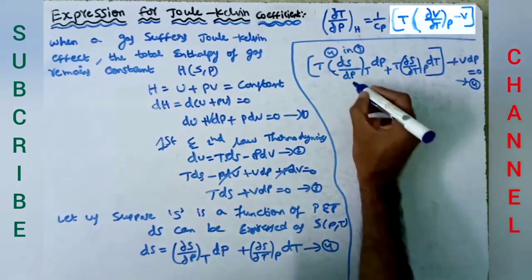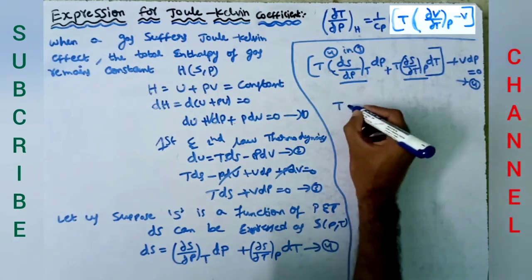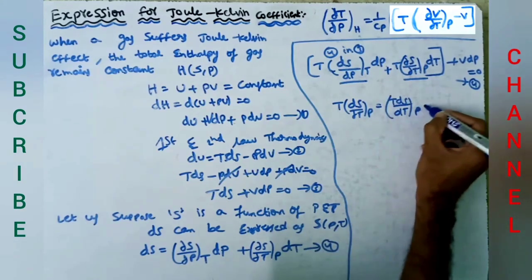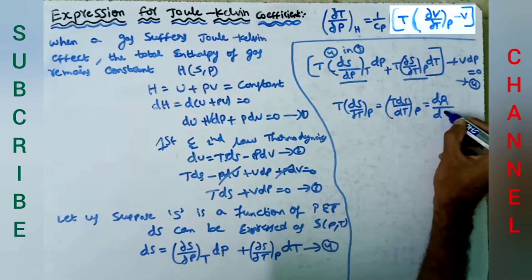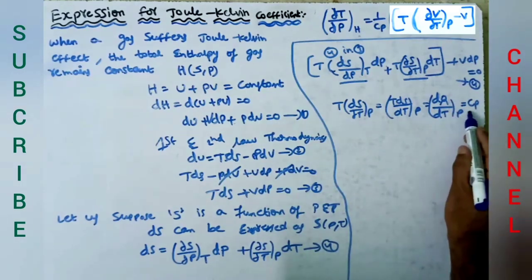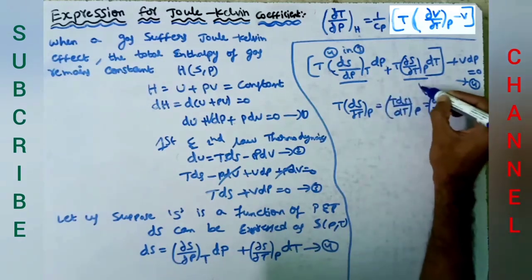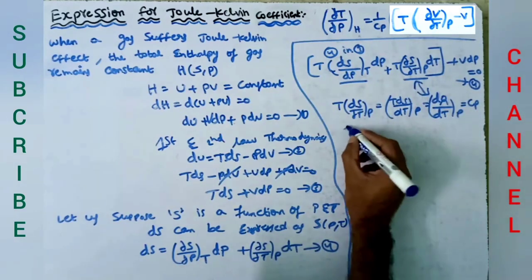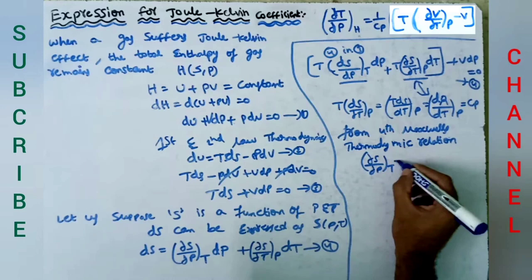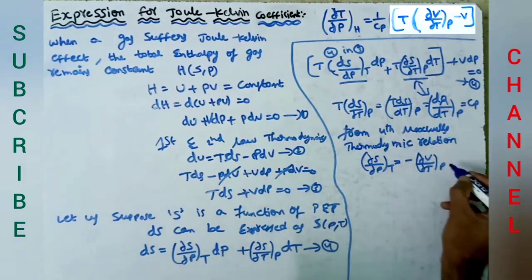In this equation we substitute: T times (∂S/∂T) at constant P equals TdS/dT at constant P, and TdS can be written as dQ according to the second law of thermodynamics, so dQ/dT at constant pressure equals Cp, the specific heat at constant pressure. Also, from Maxwell's fourth thermodynamical relation, (∂S/∂P) at constant T equals minus (∂V/∂T) at constant P.